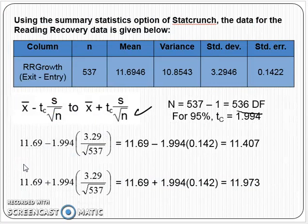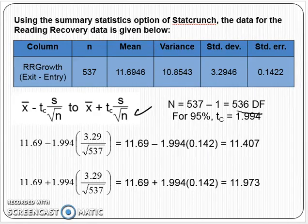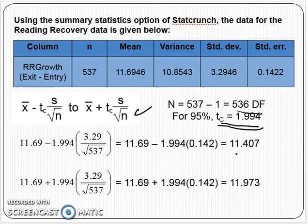Plugging the values in, we have the sample mean plus or minus 1.994. Remember, 1.994 is your T confidence value in that formula — you get that from the T confidence table. When you plug the values in, you get a bottom limit of 11.407 and a top limit of 11.973.